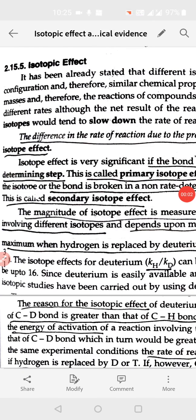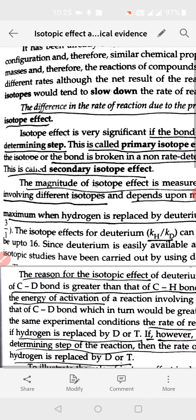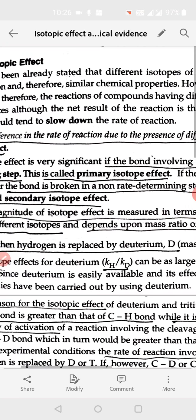Students were studying different methods to determine the mechanism of a reaction. The next method is isotopic effect. The difference in the rate of reaction due to the presence of different isotopes in the reactants is known as isotope effect.